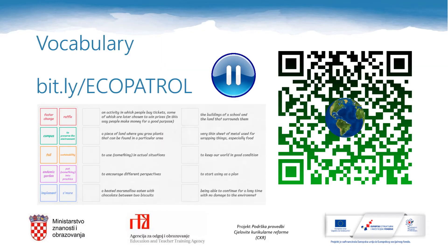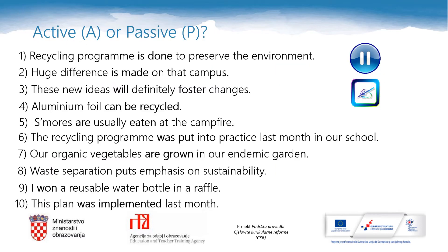Copy the link bit.ly/ecopatrol and paste it in your web browser or scan this QR code in order to revise the vocabulary one more time. Copy the sentences in your notebook. If the passive voice is used in a sentence, write the letter P at the end of the sentence. If the active voice is used, write the letter A. Pause this video and do your task. Good luck!